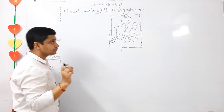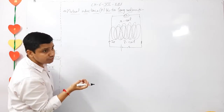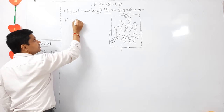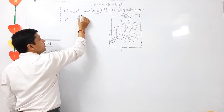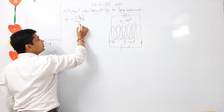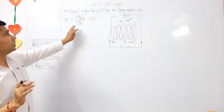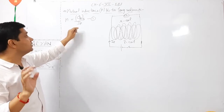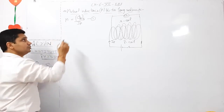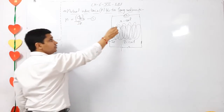The outer secondary coil has no battery or source of EMF, yet it shows deflection. That means the inner primary coil induces current in the outer secondary coil. This is mutual induction. The basic formula for mutual inductance M is: magnetic flux across secondary coil divided by current in primary coil.